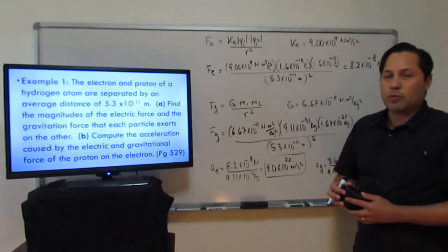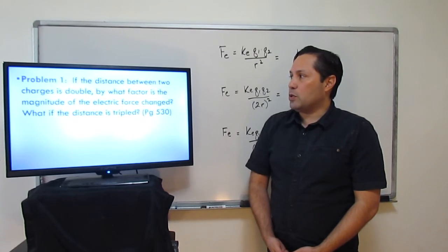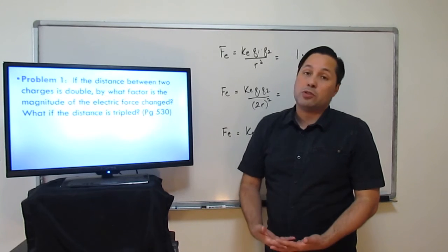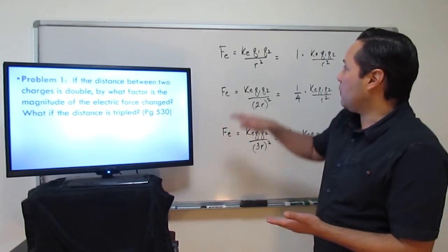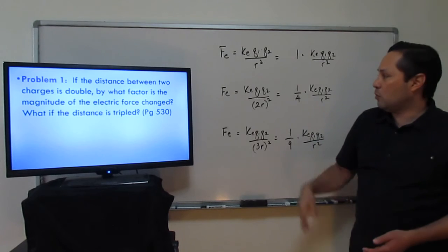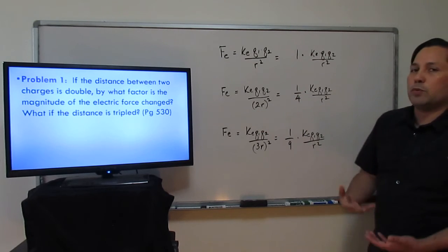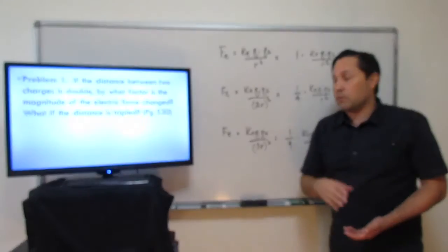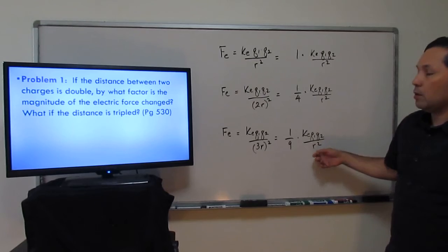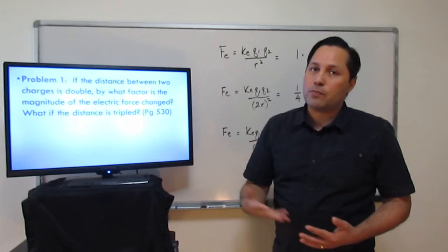That takes care of example one. In problem one, we're asked: if the distance between two charges is doubled, by what factor does the magnitude of the electric force change? And what if the distance is tripled? With the original formula the factor is 1. If we double the distance, r becomes 2r, and since we square it, 2 squared gives a factor of 1/4 — one-fourth of the original force. If we triple the distance to 3r, squaring gives one-ninth of the original force. If we quadruple the distance, it would be one-sixteenth of the original force, and so on.